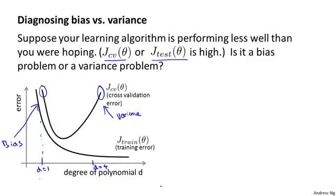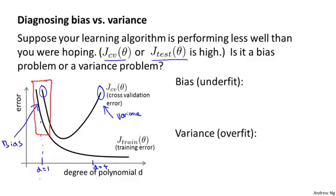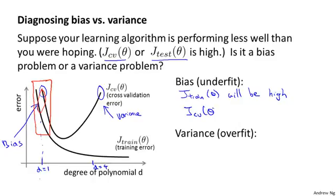This figure gives us a clue for how to distinguish the two cases. For the high bias case — that is, underfitting — both the cross-validation error and the training error are going to be high. So if your algorithm is suffering from a bias problem, the training set error will be high, and the cross-validation error will also be high, maybe just slightly higher than the training error. If you see this combination, that's a sign your algorithm may be suffering from high bias.